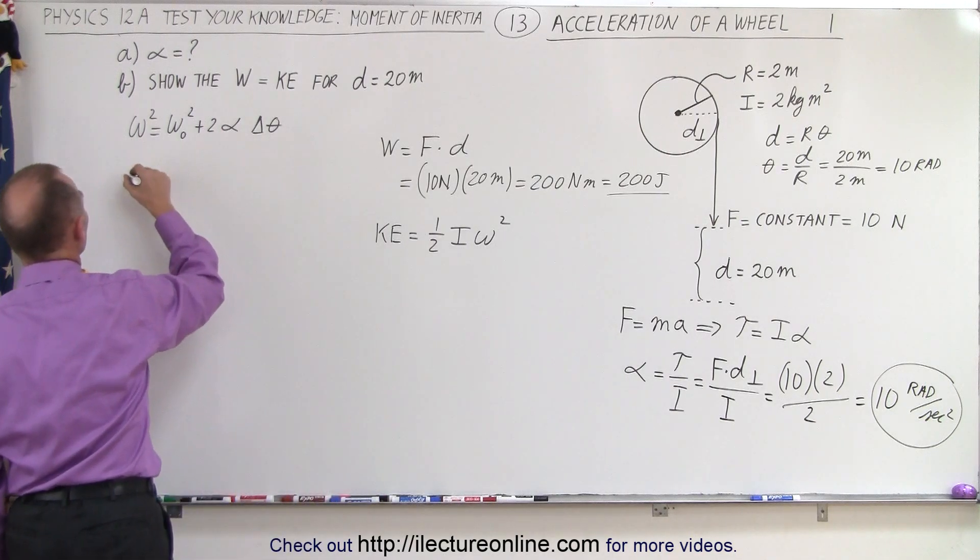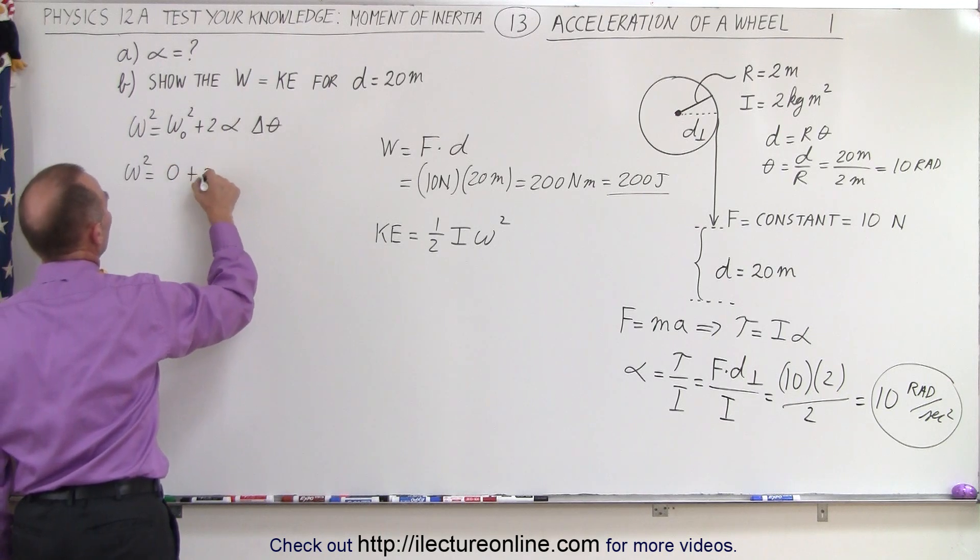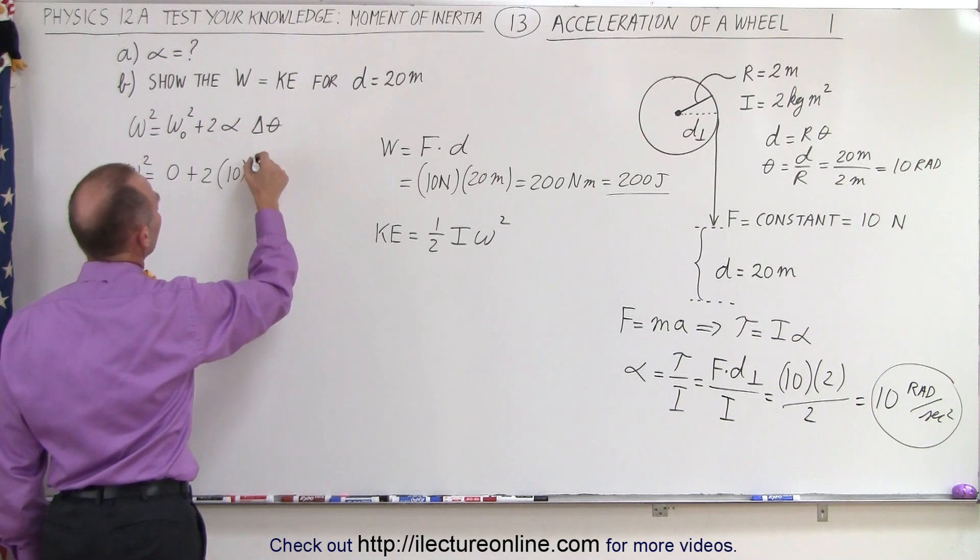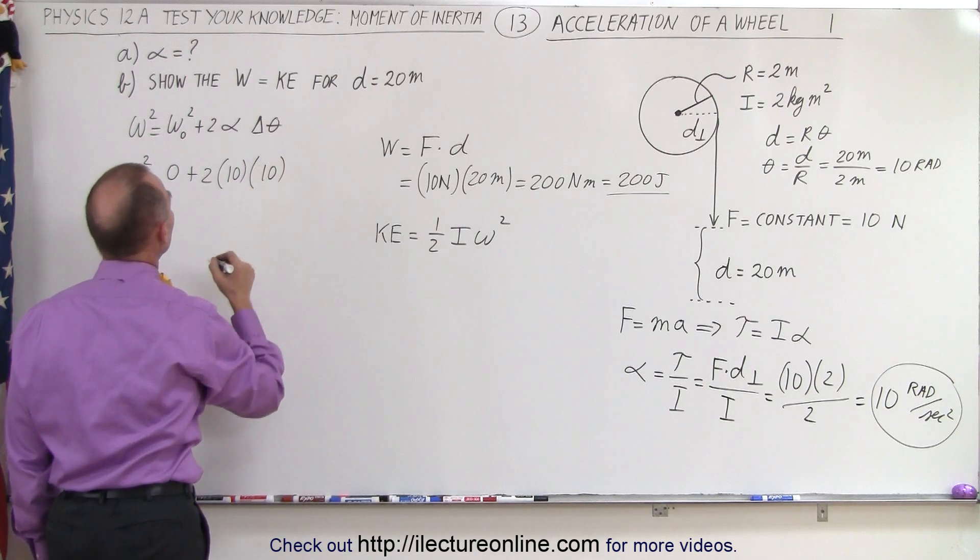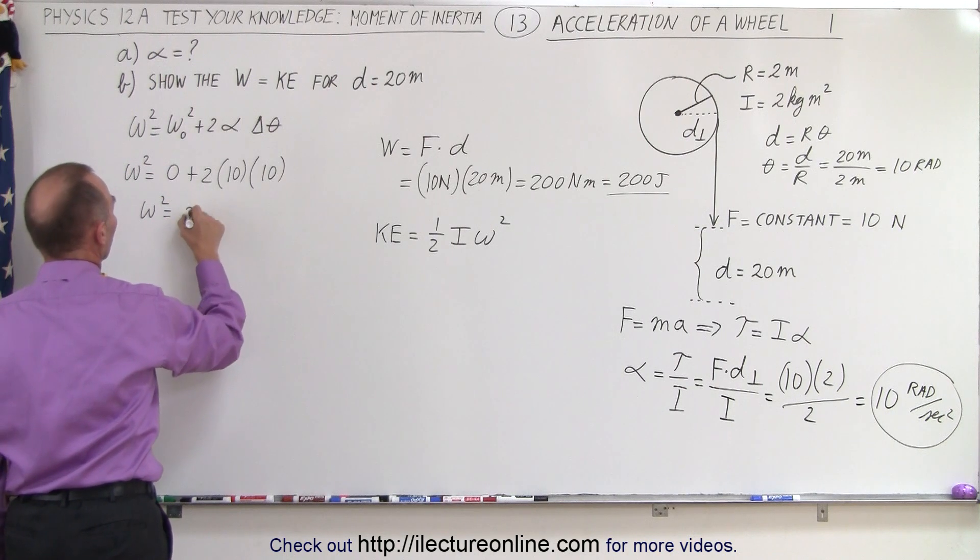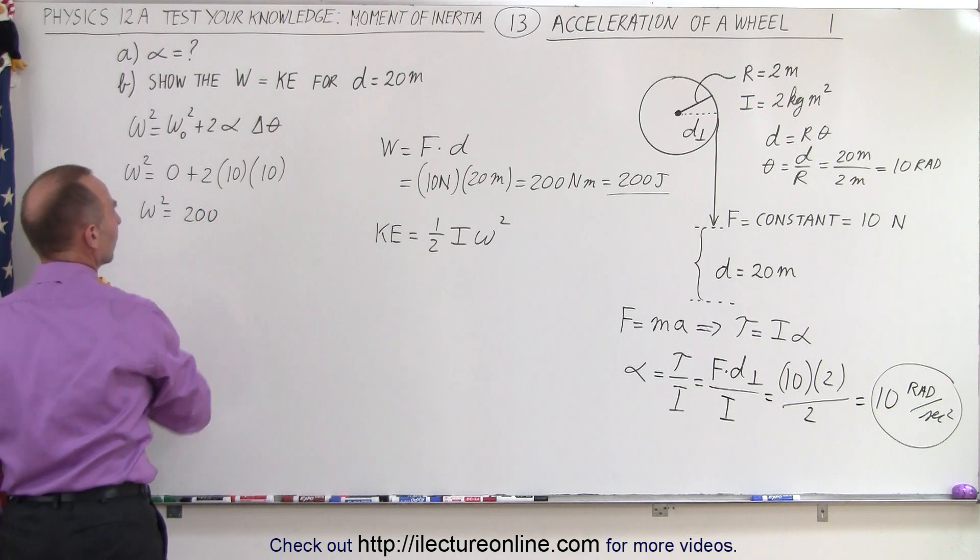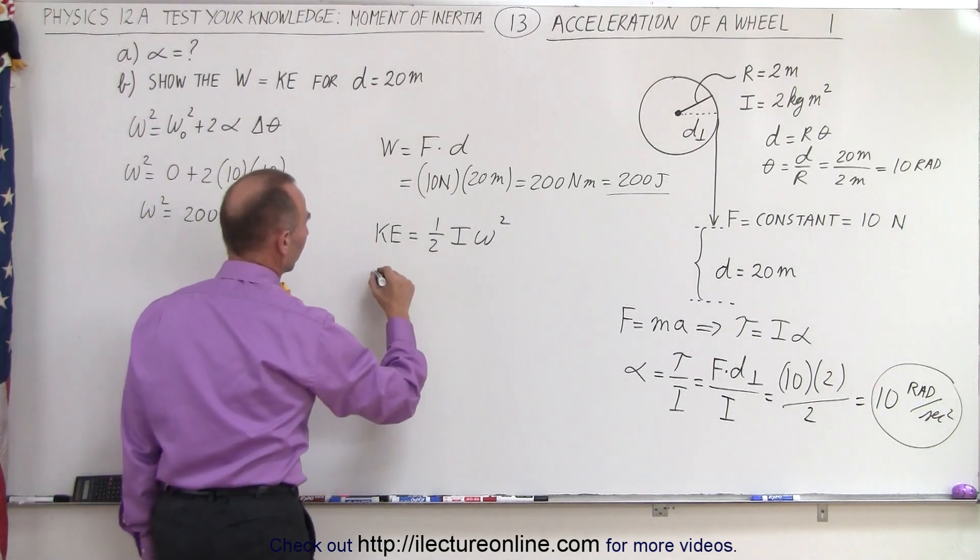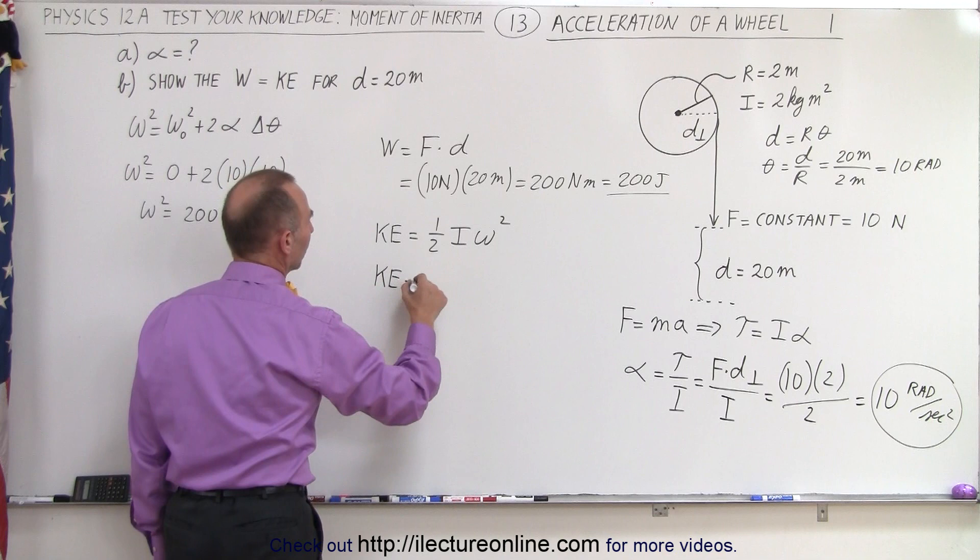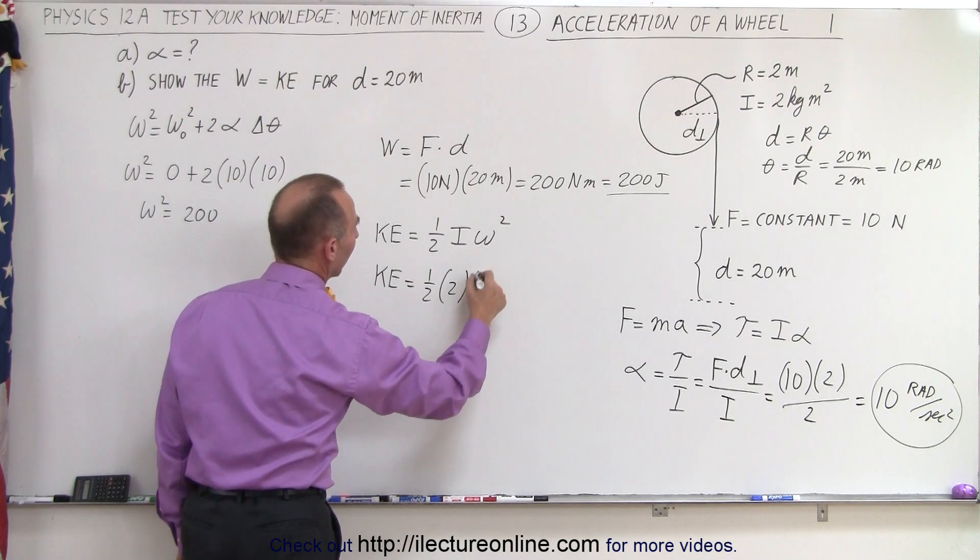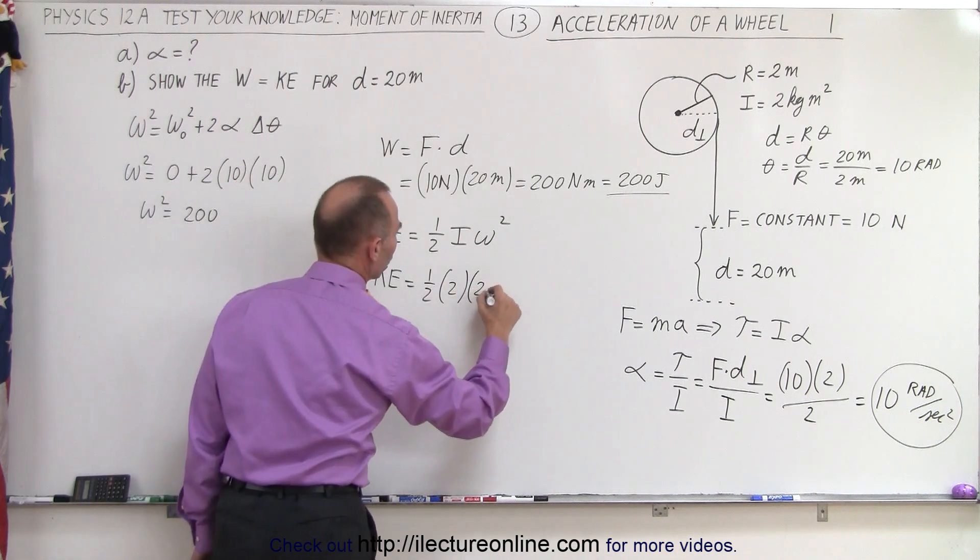And so then plugging that in here, we know that omega squared is equal to zero plus 2 times the angular acceleration, which is 10, that's from part A, and the delta theta would be 10 radians. So we know that omega squared is equal to, that's 20, that's 200. And that's all we need to know. So let's go ahead and plug that in. So the kinetic energy is equal to one-half times the moment of inertia, which was 2, and the omega squared, which is 200.